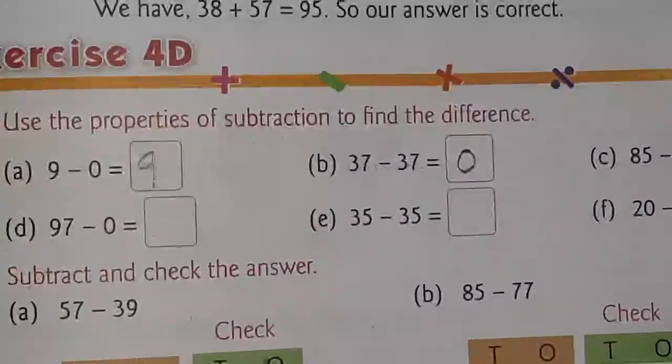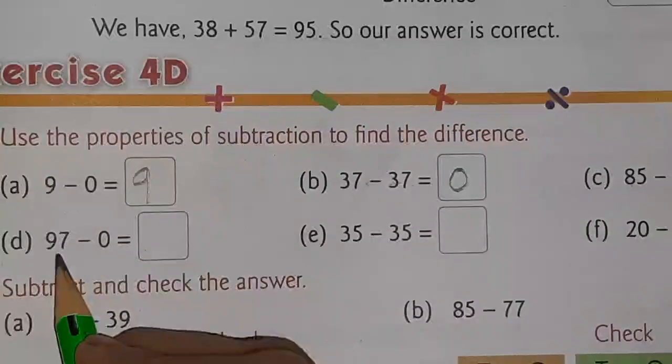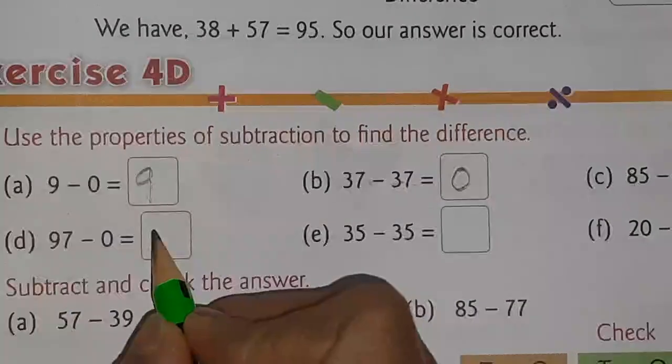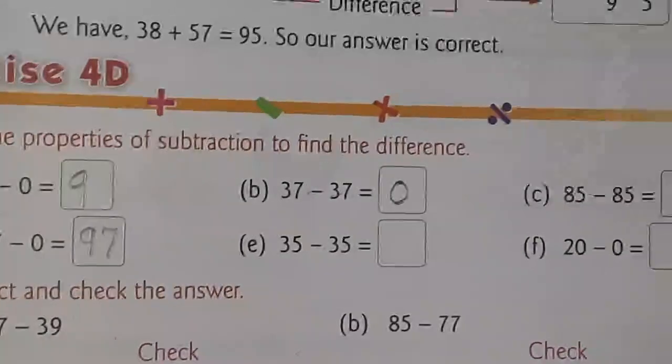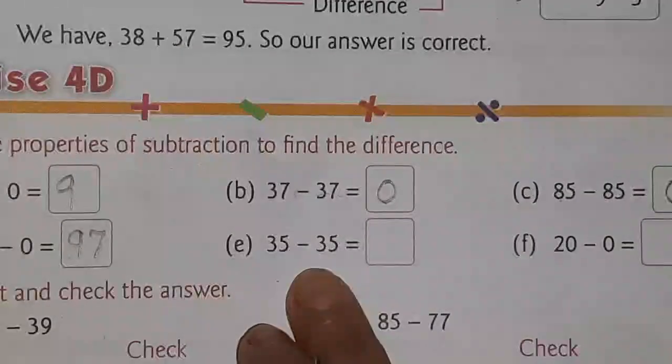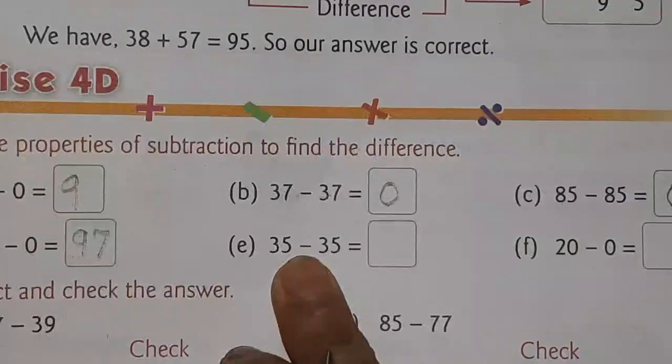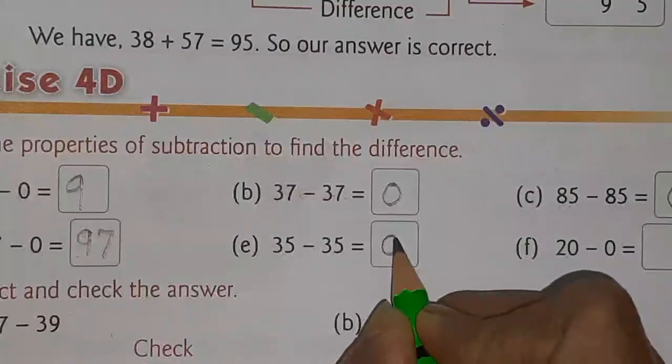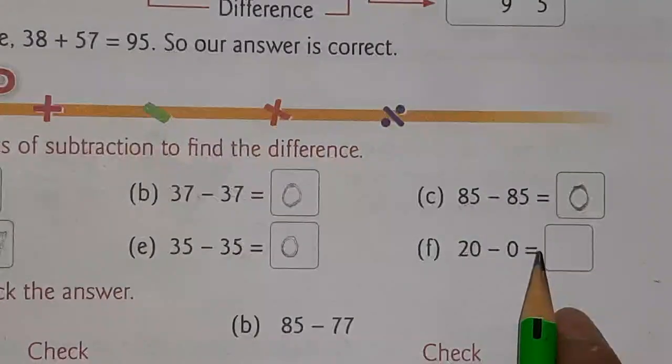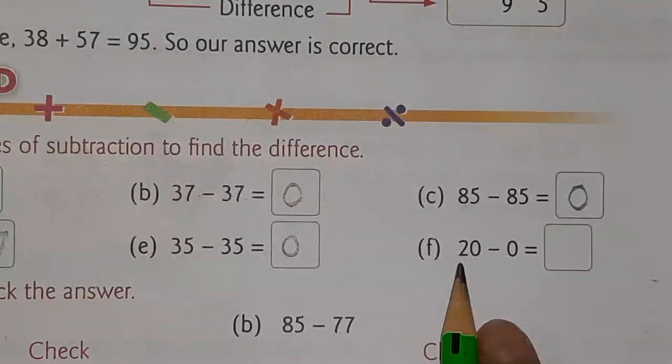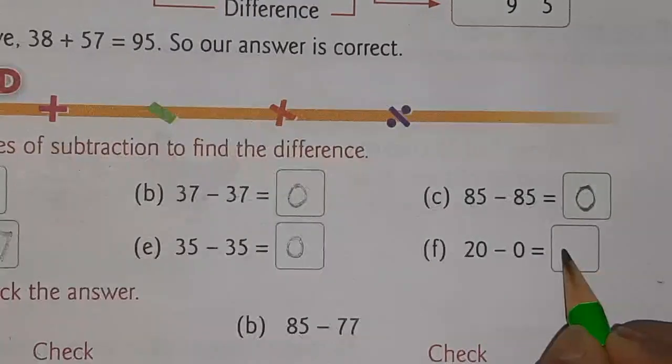Next one, 97 minus 0. You are subtracting 0 from any number. You are getting the number itself as an answer. That is 97. Next one is 35 minus 35. So, same number you are subtracting here. So, you will get answer 0. Next one, F 20 minus 0. You are subtracting 0 from 20. So, the number itself coming as an answer.